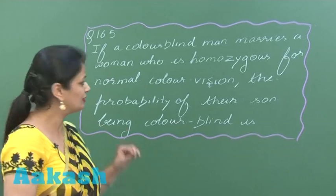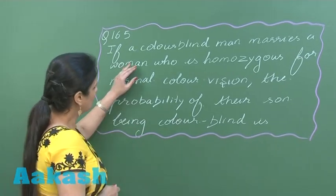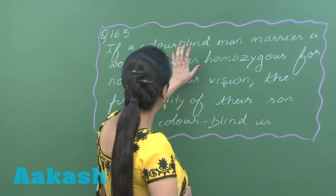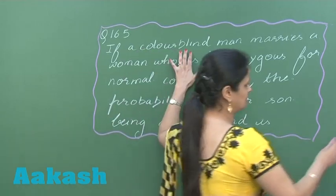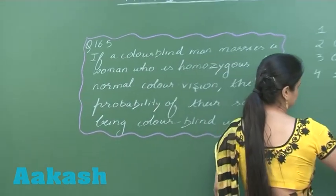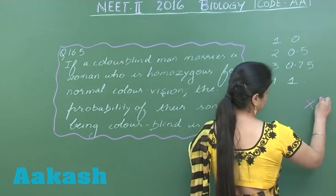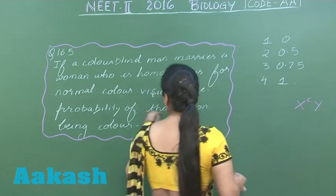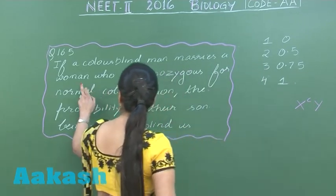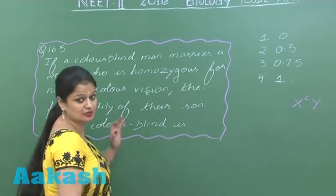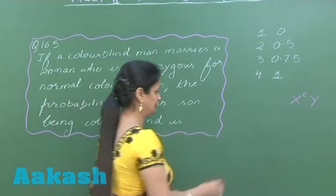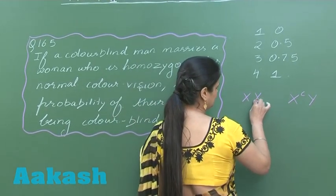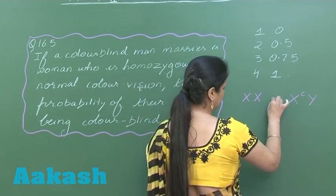Now we can read this question. In this question, the man is color blind and the female is normal.